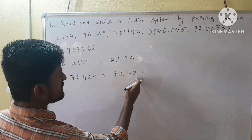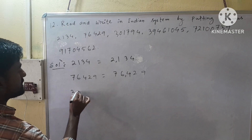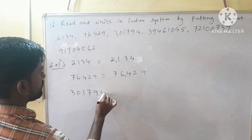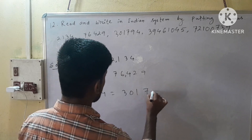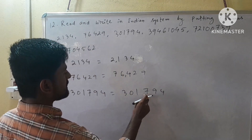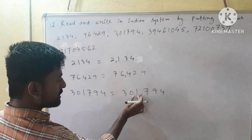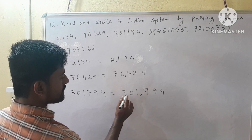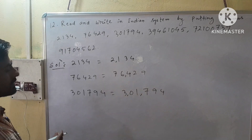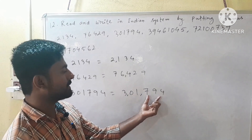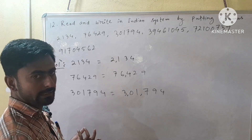Our next number is 3, 0, 1, 7, 9, 4. So 1's place, 10's place, 100's place — therefore we put a comma here. After then, after 2 digits we put a comma here. So we have 3 digits on the left, then 2 digits, 2 digits, 2 digits like this.